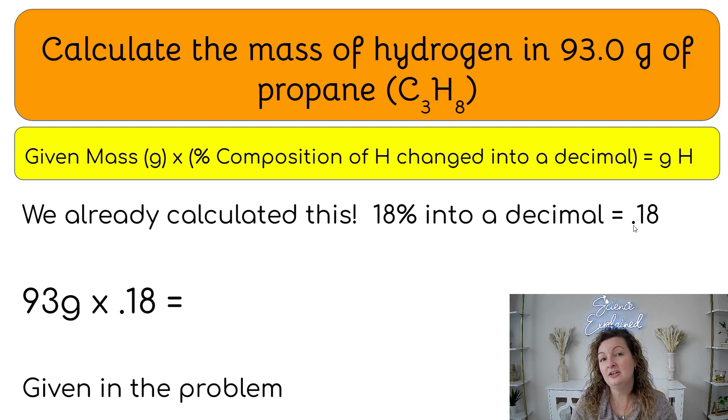So we're going to change it back into a decimal. So 0.18. Okay. We're just dividing by a hundred here in order to turn it back into a decimal.